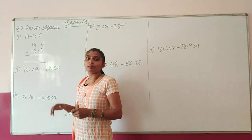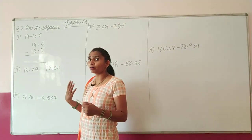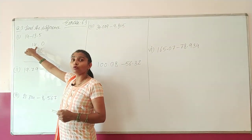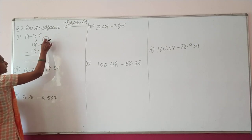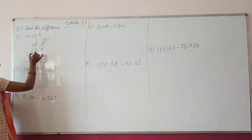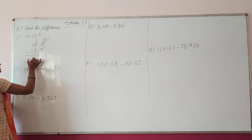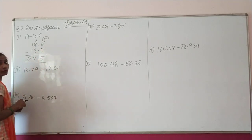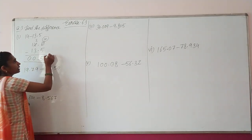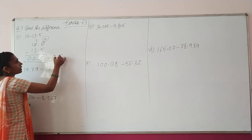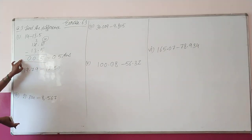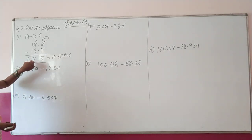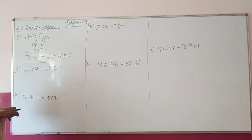Can we subtract 5 from 0? No. So we take borrow from the next place. 4 becomes 3 and 0 becomes 10. 10 minus 5 = 5. Then decimal. 3 minus 3 = 0. 1 minus 1 = 0. So the answer is 0.5. Note that leading zeros have no value, so the answer is simply 0.5.